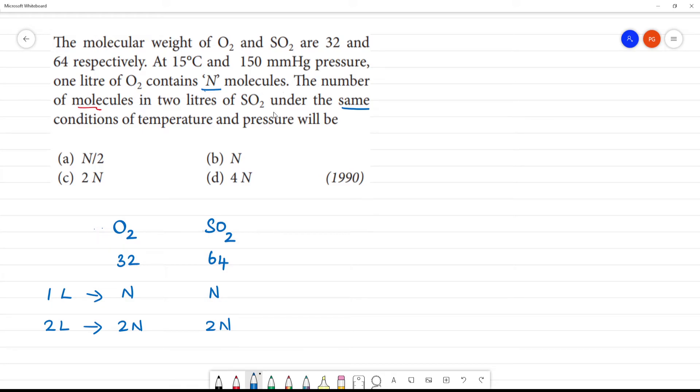So 2 liters of SO2 under the same conditions of temperature and pressure will be 2N. Clear? The number of molecules in 2 liters of SO2 - if 1 liter has N, then 2 liters has 2N because of equal volume.